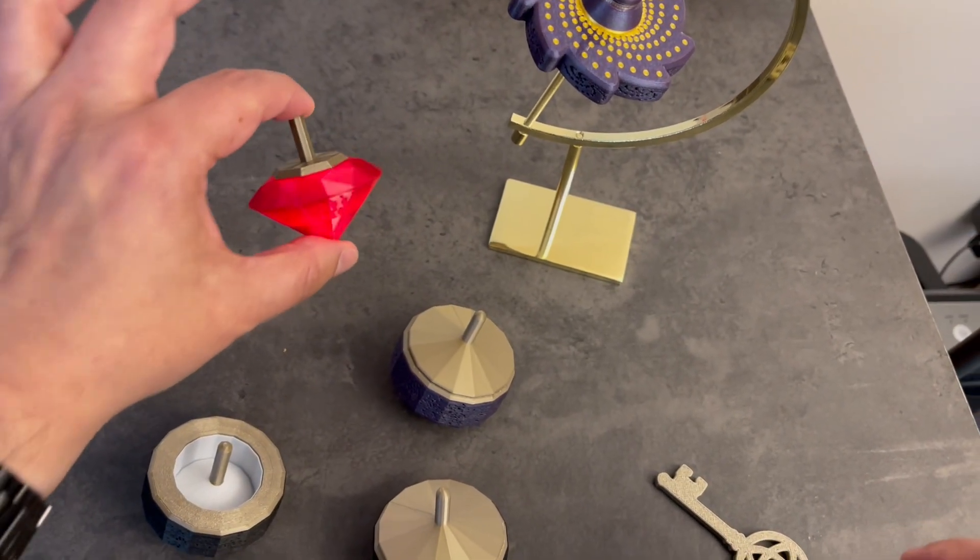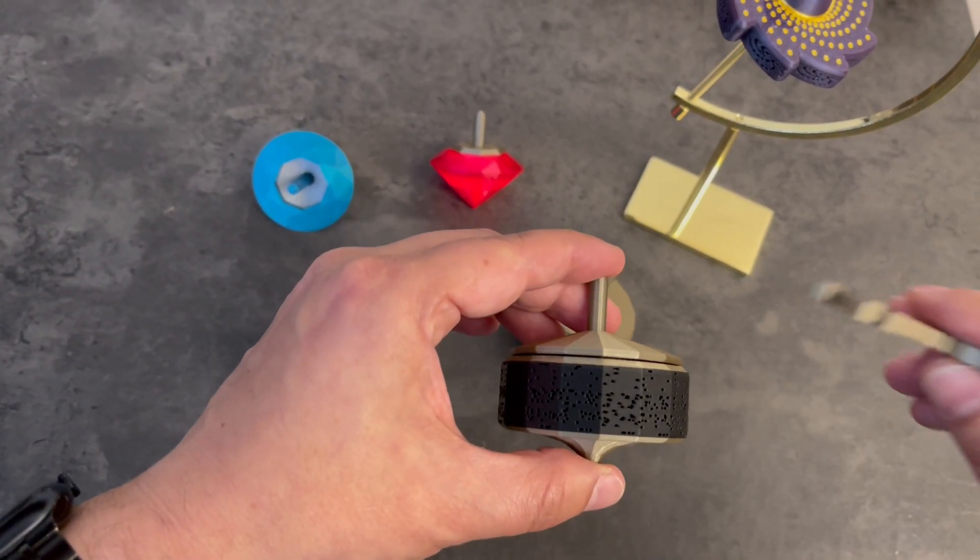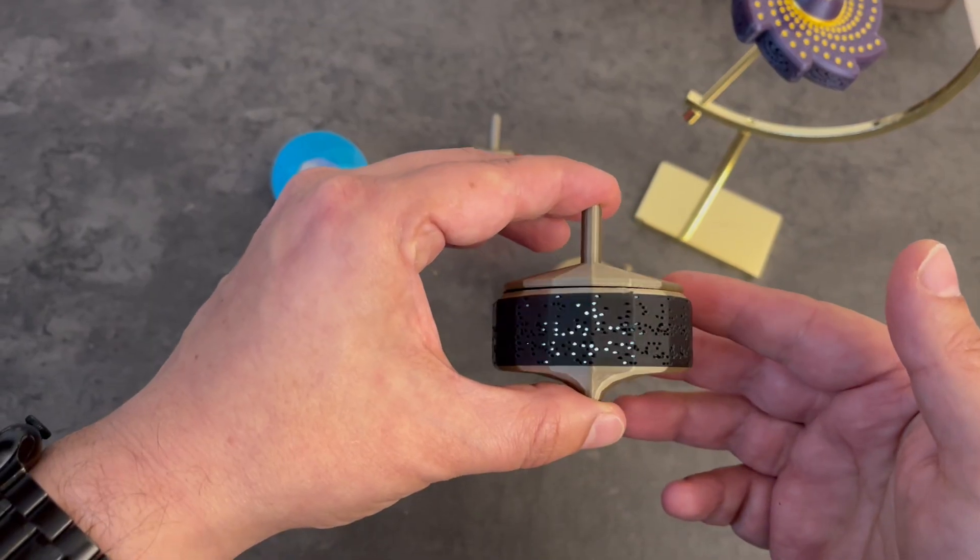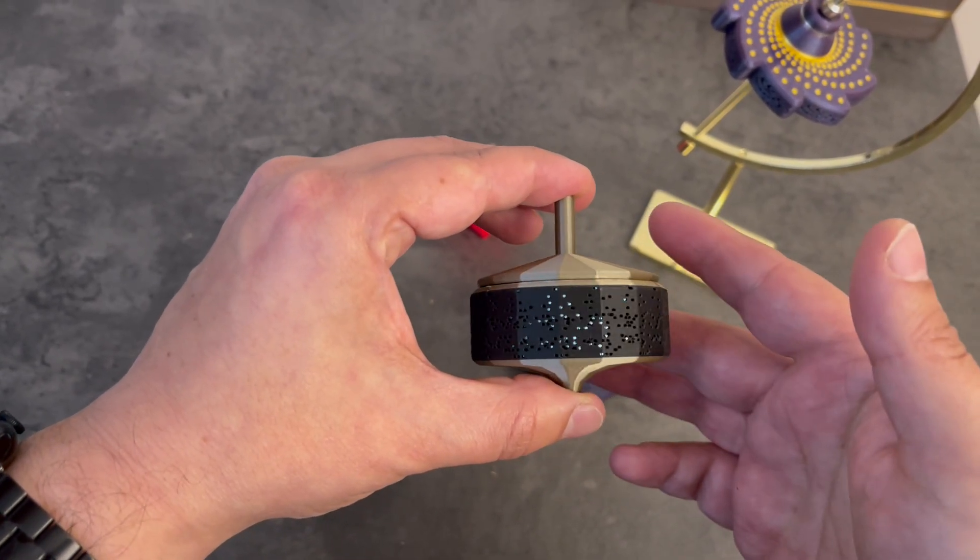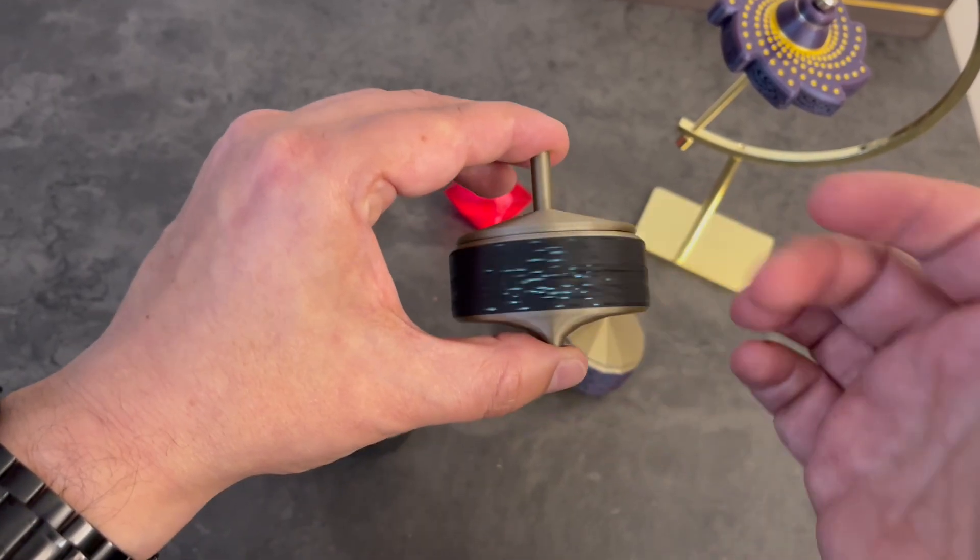So those are the animations I've done, but I want to do something a little different this time. So instead I took a message and I split it up into dots and then scattered it around so at any given moment there's only a tiny bit of any given letter, so you really can't tell what it is until you spin it.